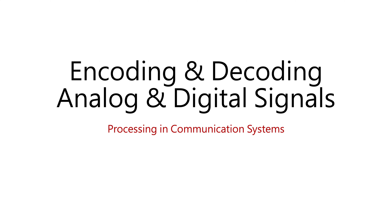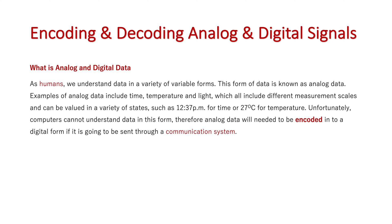Processing in communication systems: encoding and decoding analog and digital signals. First we need to understand what analog data is. As humans, we understand data in a variety of variable forms. This form of data is known as analog data, which includes examples such as time, light, and temperature.